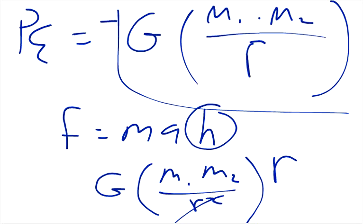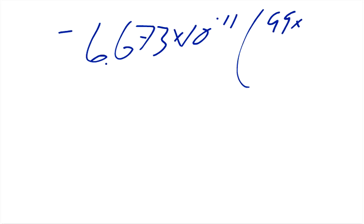So you just plug in your numbers, so you have negative in the gravitational constant 6.673 times 10 to the negative 11th, and you multiply that by the mass of the satellite, so 99 times the mass of the Earth